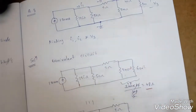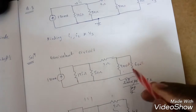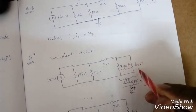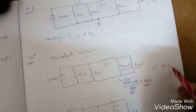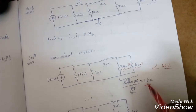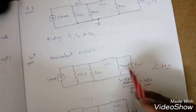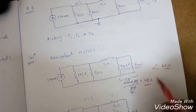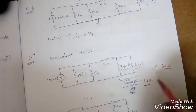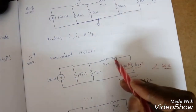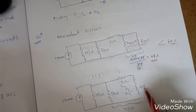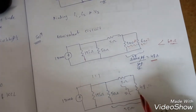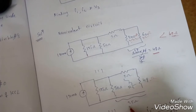One important concept: when one resistance is high and another is low, the parallel combination gives less than the lower resistance. Here we got 48 ohms, which is less than 60 ohms. Adding the 2-ohm series resistance gives 50 ohms. Then 50 ohms in parallel with another 50 ohms gives 25 ohms.